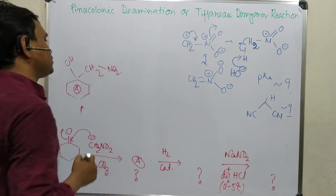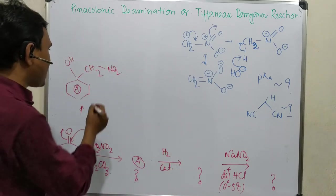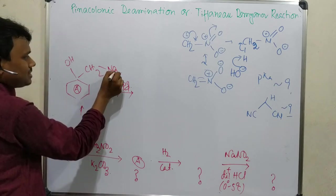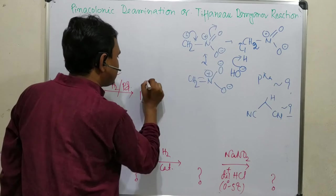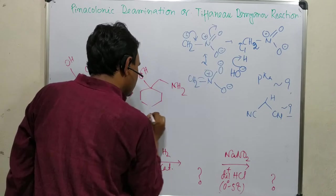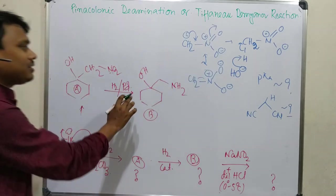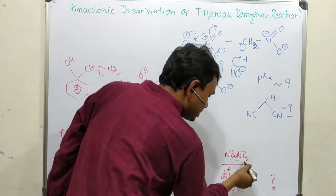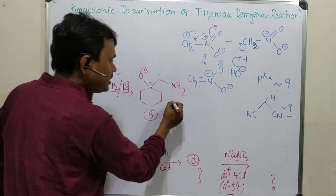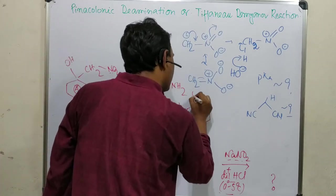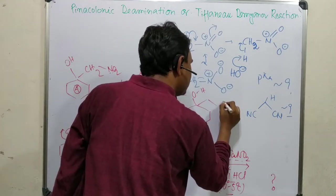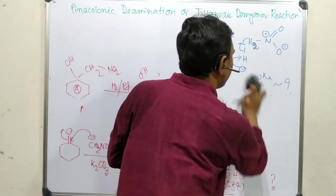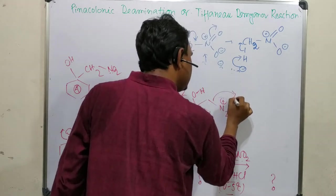In step 2, with H₂/Pd catalyst as a reducing agent, the NO₂ group is reduced to NH₂. So the product now has —OH and —CH₂NH₂, giving a 1,2-amino alcohol — let's call this compound B. Now, this 1,2-amino alcohol is treated under similar conditions: NaNO₂ and HCl at 0–5°C, producing the diazonium salt (—OH and —N₂⁺). This is exactly the pinacol deamination setup.